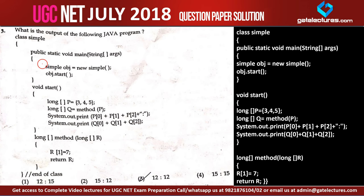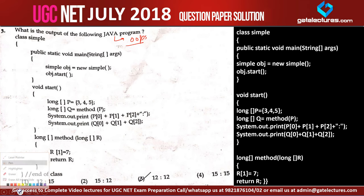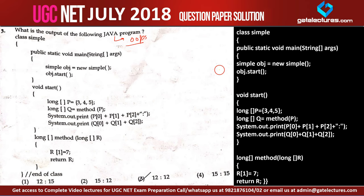Now let us look at question number 3. This is again a very easy question and it is from Java programming. Java programming comes under OOPS, that is object-oriented programming. In this label Java programming is not at all mentioned, but you can see some questions in the previous examinations of UGCNET because Java comes under the OOPS programming languages.